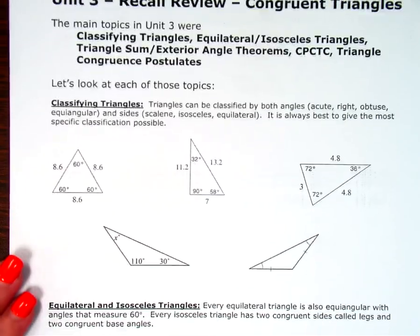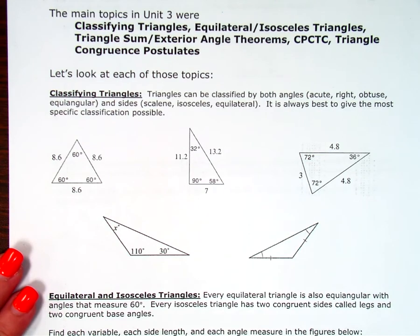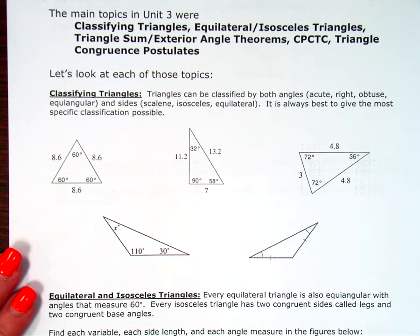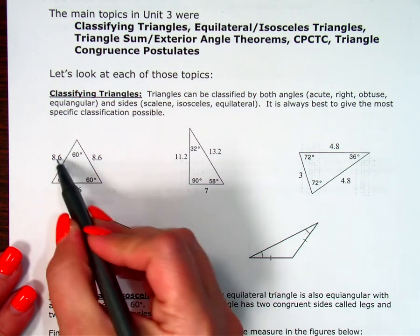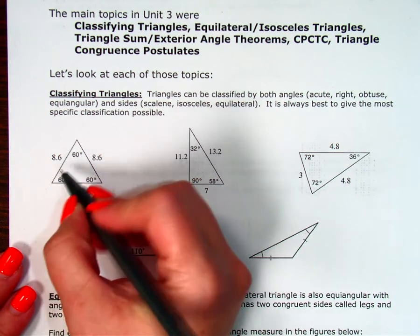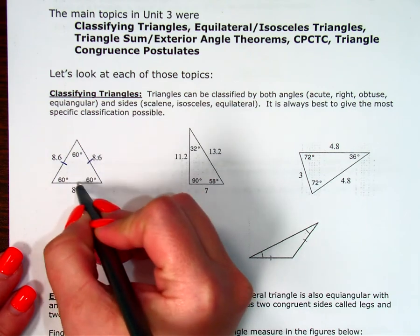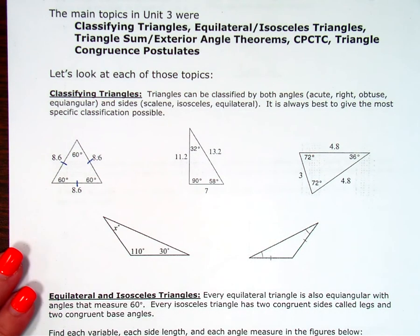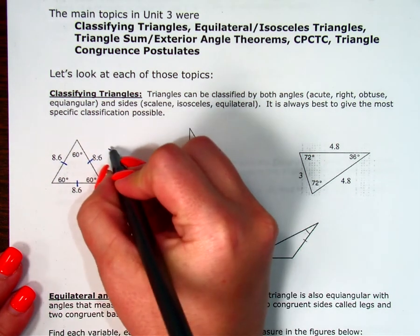For example, when I look at these triangles, each one can have two different classifications, one by angles and one by sides. When I look at this first one by the sides, they're all 8.6, so they all have equal side lengths, which means this is definitely equilateral.